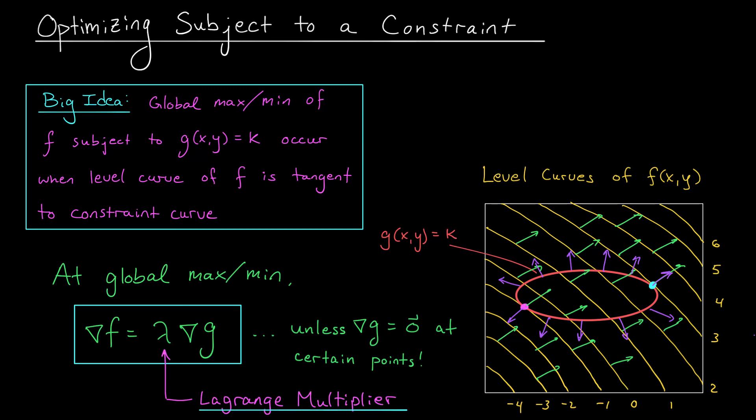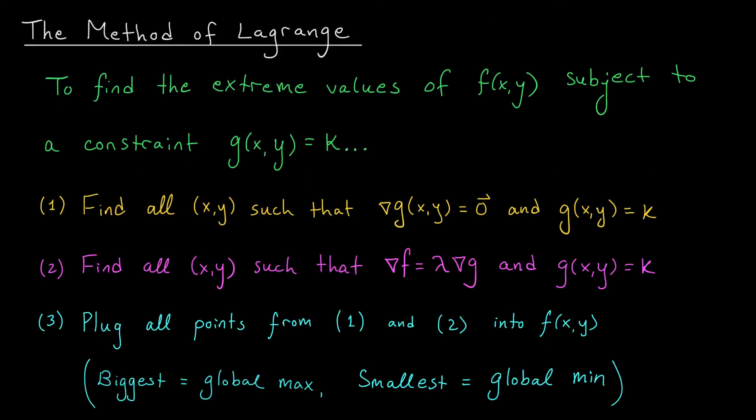I'm going to summarize these ideas on the next slide, and then we'll jump into some examples. Okay, here's your summary, folks. The method of Lagrange. If you're looking for the extreme values of a function f(x,y) subject to a constraint g(x,y) equals k, well, you can first locate all those problematic points (x,y) where the gradient of g is the zero vector, and of course, the points lie on our constraint curve. They satisfy the equation g(x,y) equals k. Usually, this can be done quite quickly. The biggest part of the problem occurs in step two. We need to find all points (x,y) that satisfy the Lagrange equation. Gradient of f equals a scalar multiple lambda times the gradient of g. Of course, we should also make sure that the points lie on our constraint curve, so they have to satisfy this equation as well. I'll show you how to do step two in some of our example videos.